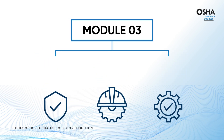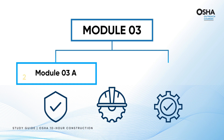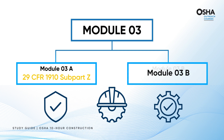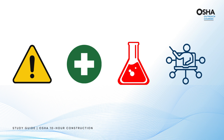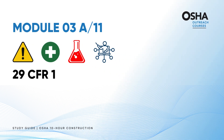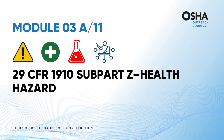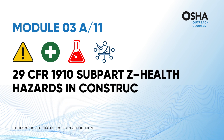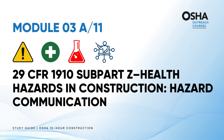Module 3 is divided into two sections: Module 3A, 29 CFR 1910 Subpart Z, and Module 3B, OSHA 1926 Subpart D. We will first discuss Module 3A, which is about 29 CFR 1910 Subpart Z, Health Hazards in Construction and Hazard Communication.